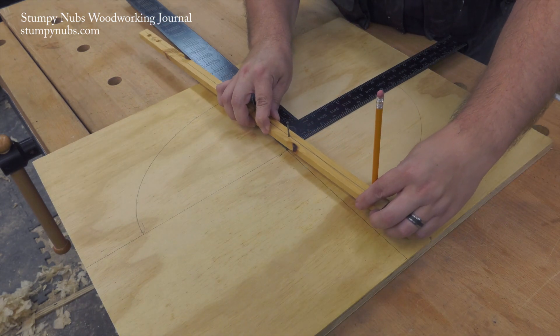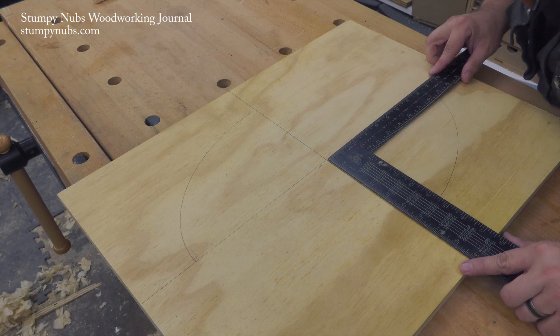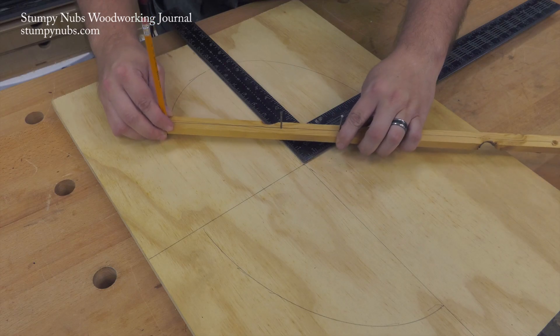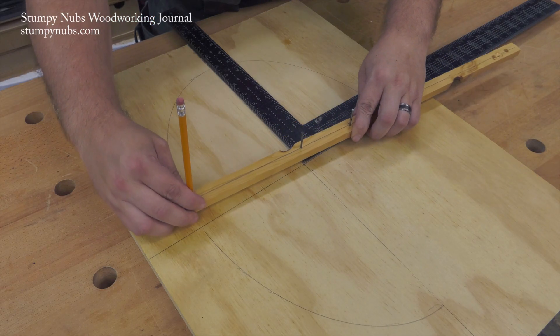After you're done with one quadrant, you rotate the square to the next one, and you repeat all the way around through all four quadrants to form your full ellipse.